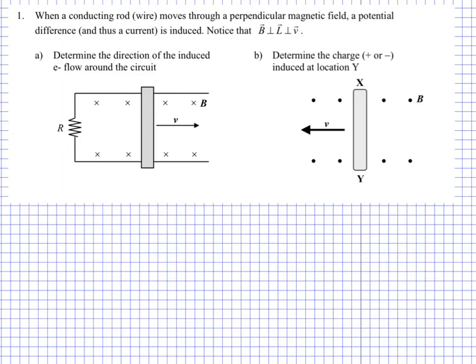Hello everyone, this is another Physics 30 example set. This one is from Lesson 8 and Unit 3. This is going to be to do with Lenz's Law, or what we call Electromagnetic Induction — that is to say that there is an induced force or an induced interaction by the movement of something in the system. So let's take a look at these examples, and hopefully it will become a bit more clear.